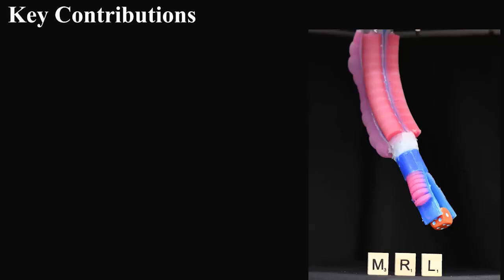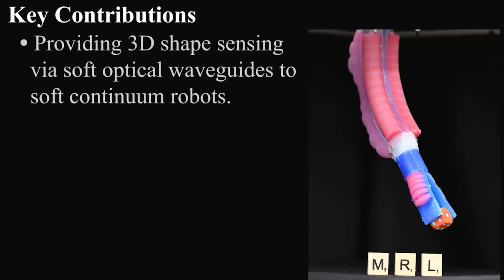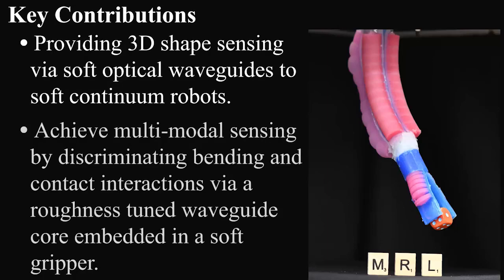Our robotic system is capable of providing 3D shape sensing via soft optical waveguides to soft continuum robots and achieving multimodal sensing of tip position and contact interactions via a tuned waveguide embedded in a gripper.